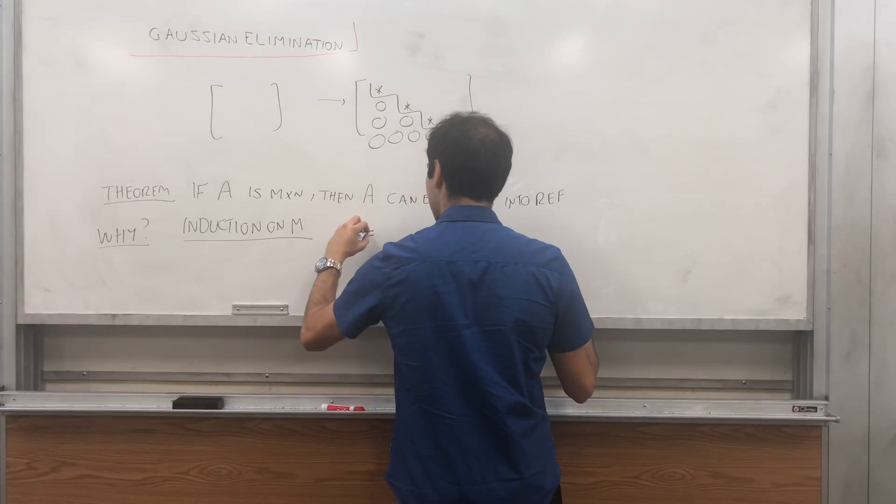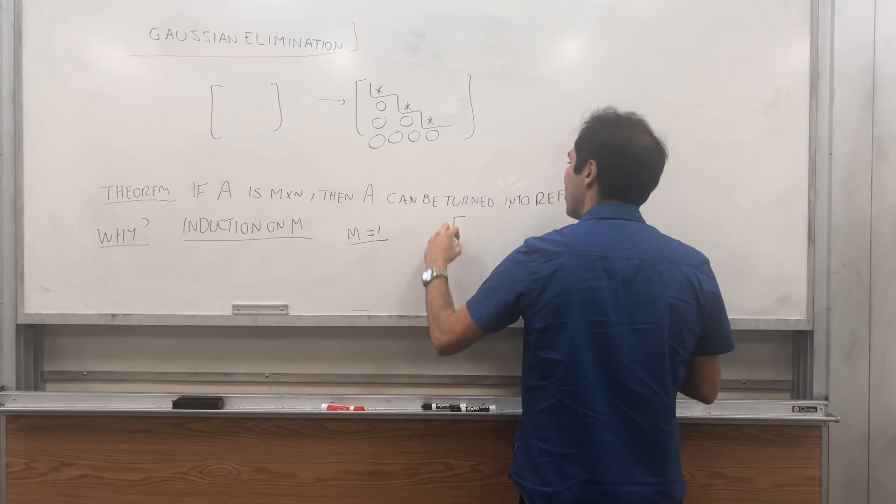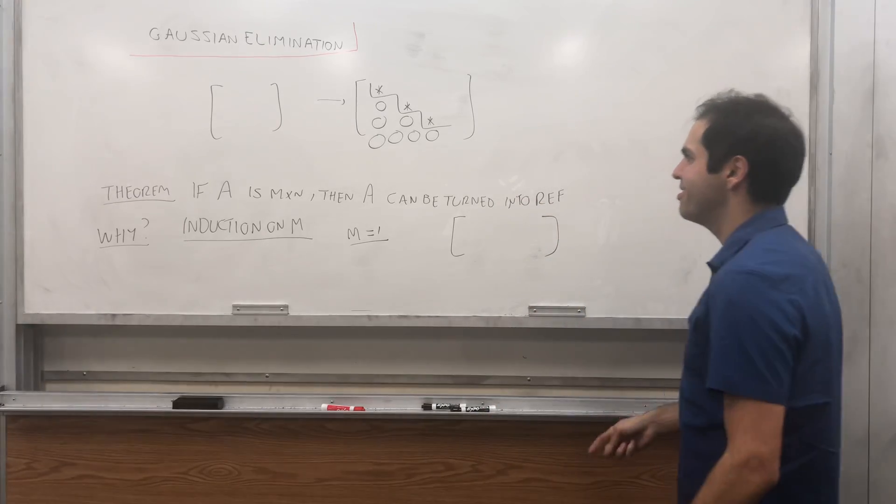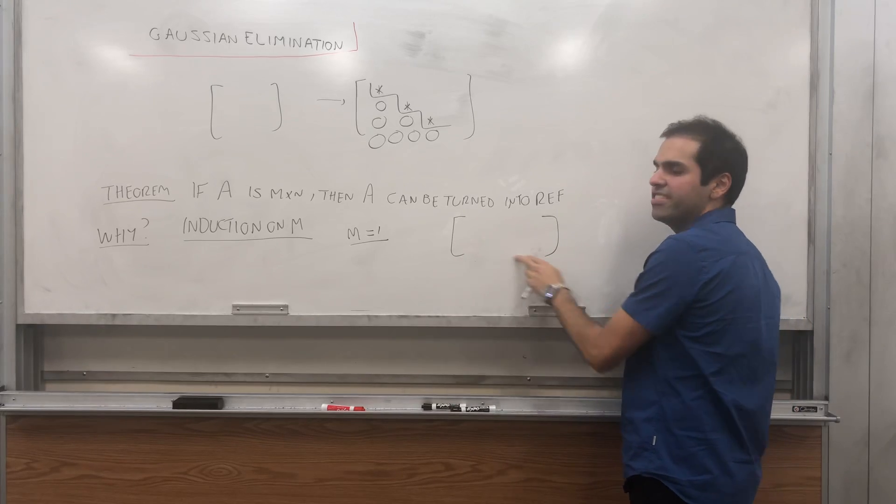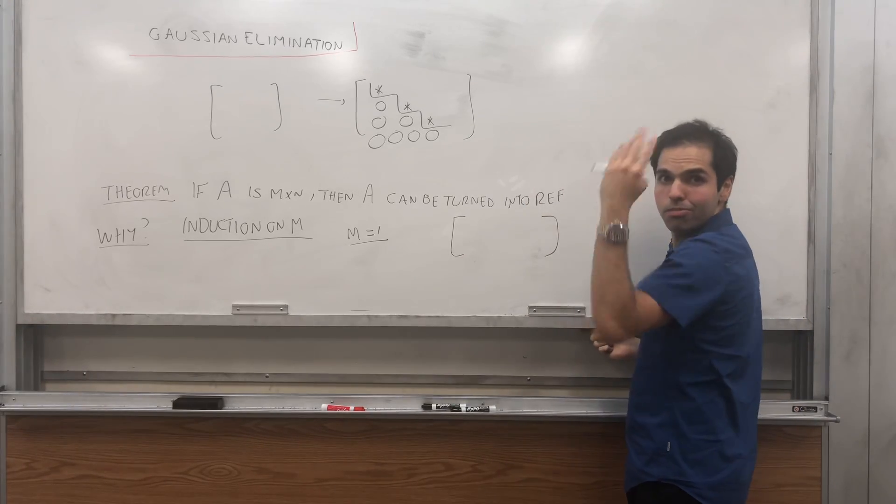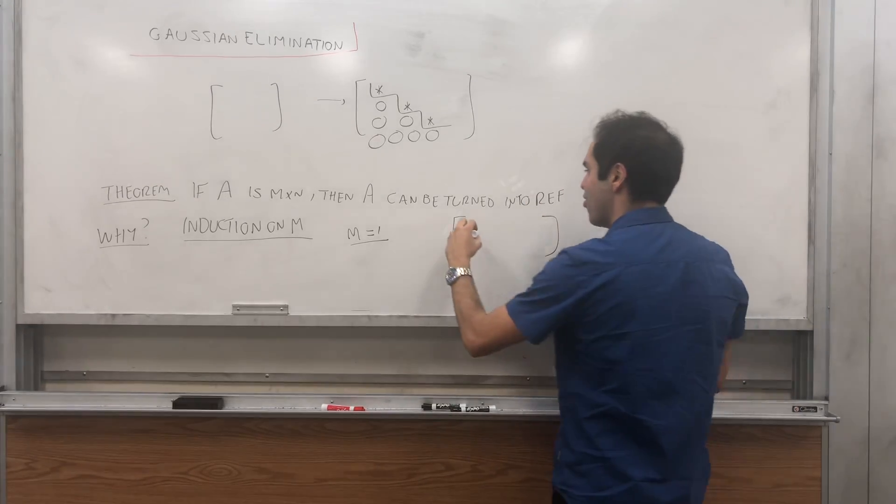Well then A has only one row. But a matrix in one row has a triangular form, because either it's zero, that's by definition in row echelon form,